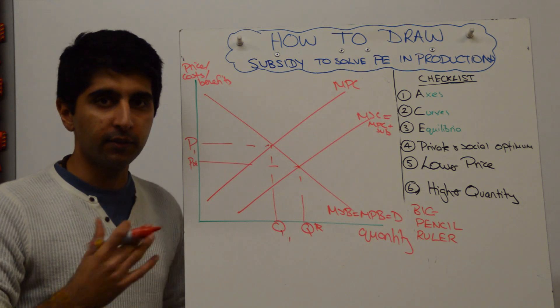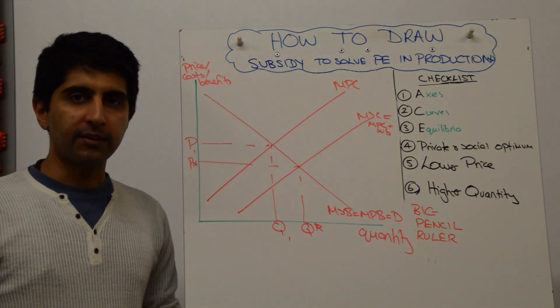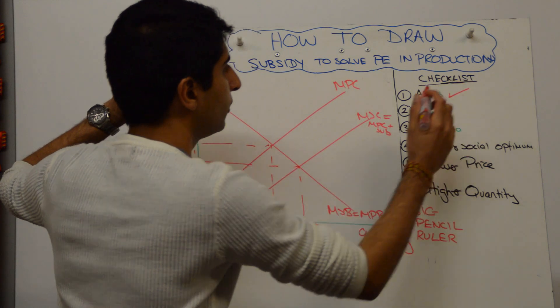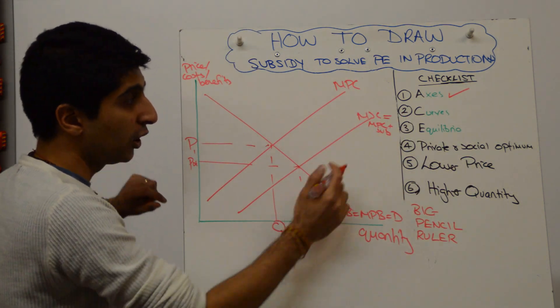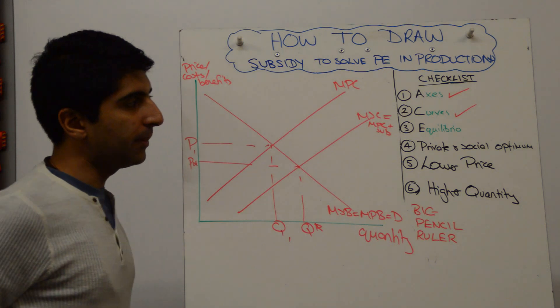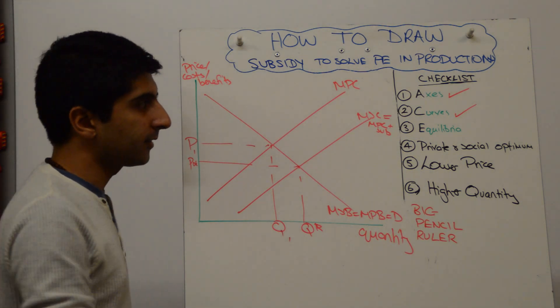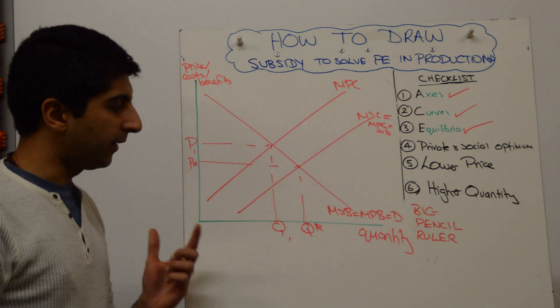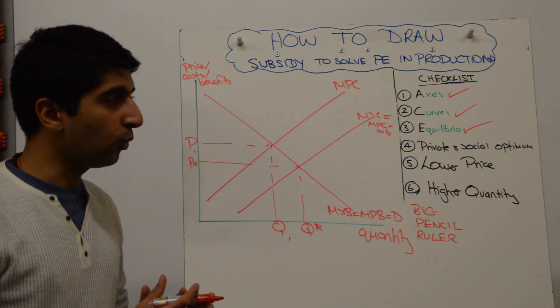Alright, that's the diagram done. Once you've done that, go through your mental checklist. Have you done your good habits? Have you labeled the axis? Yes. Have you labeled your curves? Perfectly. Showing the subsidy. That's important. Yes. Have you labeled the equilibria? Yes. Good. Have you shown that there is a private optimum and there is a different social optimum that we've moved towards?